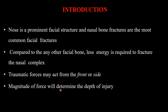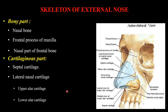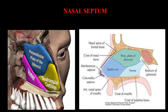Traumatic forces may act from the front or from the side, and the magnitude of force will determine the depth of injury. The skeleton of the external nose consists of a bony and a cartilaginous part. The bony part includes the nasal bones, the frontal process of the maxilla, and the nasal part of the frontal bone. The cartilaginous part includes the septal cartilage, the lateral nasal cartilages, divided into upper and lower alar cartilages.